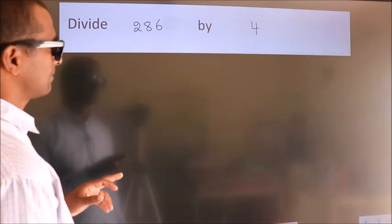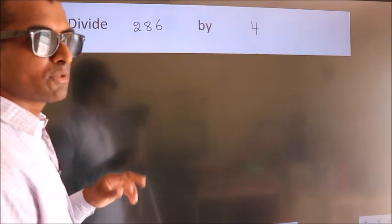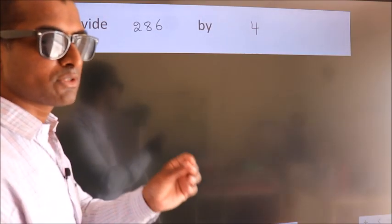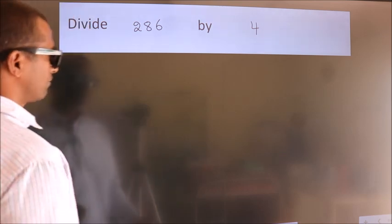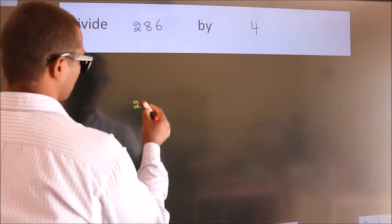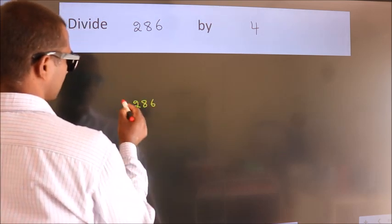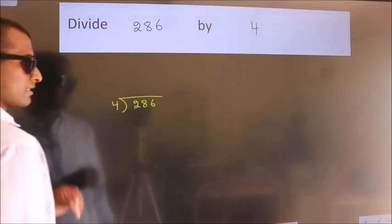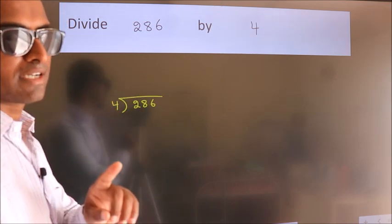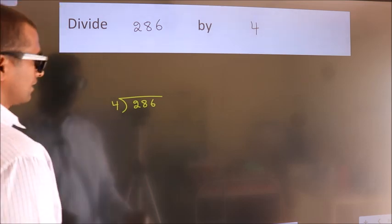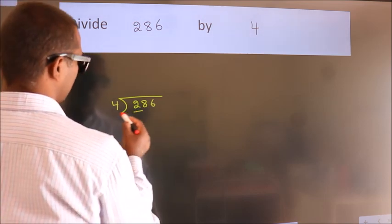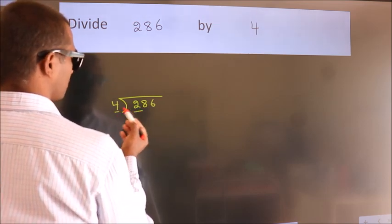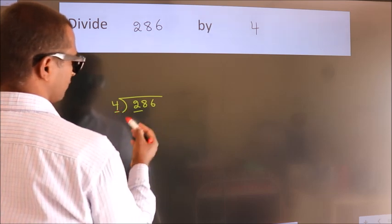Divide 286 by 4. To do this division, we should frame it in this way: 286 here, 4 here. This is your step one. Next, we have 2 here. 4 into 2? 2 is smaller than 4, so we should take two numbers: 28.